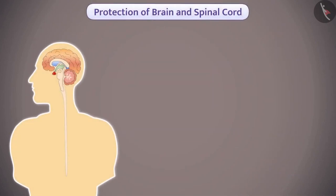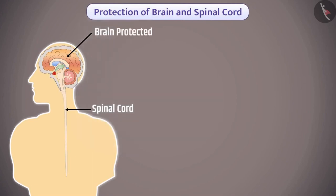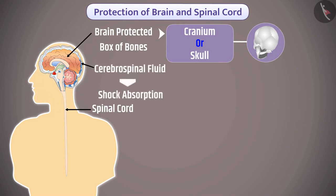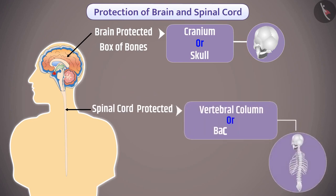Regarding the protection of the brain and spinal cord: the brain and spinal cord are soft organs. The brain is protected by a box of bones called the cranium, or skull, and by cerebrospinal fluid located inside the skull. This fluid absorbs shocks and protects the brain. Similarly, the spinal cord is protected by the vertebral column, or backbone.